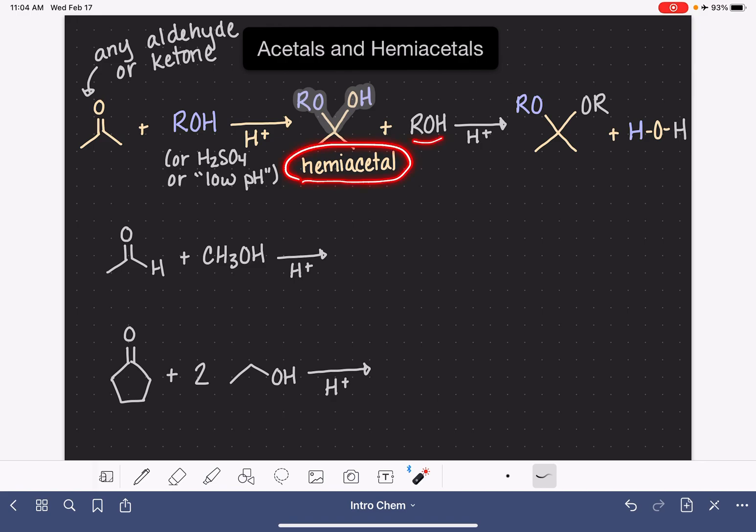The hemiacetal can react with a second alcohol molecule. The two alcohol molecules could be identical to each other, or they could be totally different. It just really depends on what you want as a chemist. If it reacts with a second alcohol molecule, this is the product of that reaction. This is called an acetal. So this is a full-blown acetal.